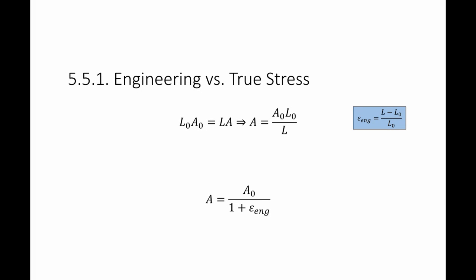Since I'm assuming L₀A₀ = LA, A is equal to A₀L₀ divided by L. I also know that the engineering strain is equal to L minus L₀ over L₀. Substituting epsilon engineering into the equation for A, I get that A is equal to A₀ divided by 1 plus epsilon engineering.